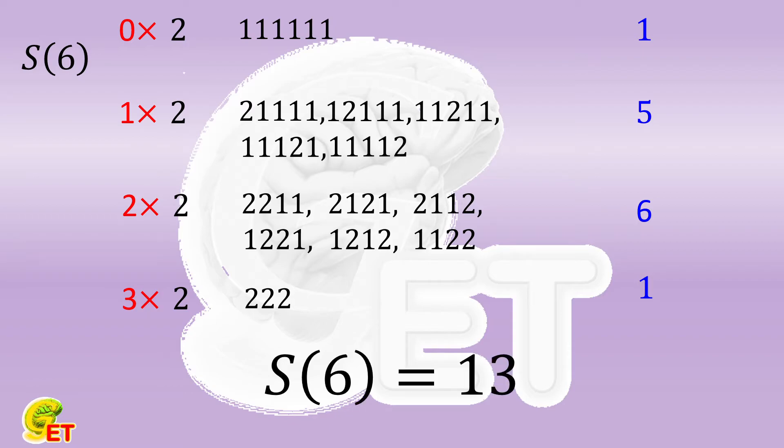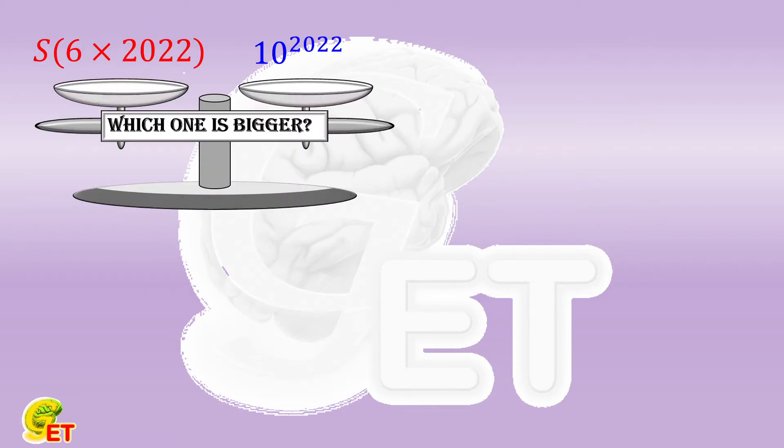But it's still too difficult if we really want to calculate S of 6 times 2022. However, this question itself already gives a hint, because it asks about 6 times 2022 rather than its result 12132. So what if we don't use 2022? How about if we use another number to replace 2022?